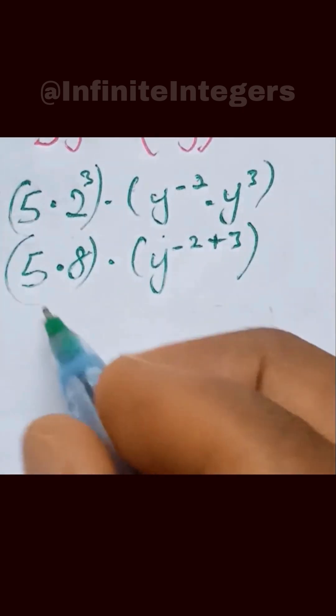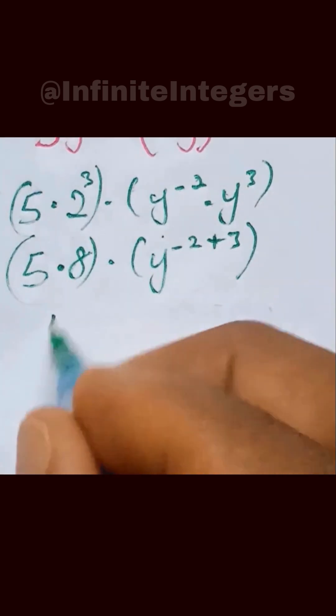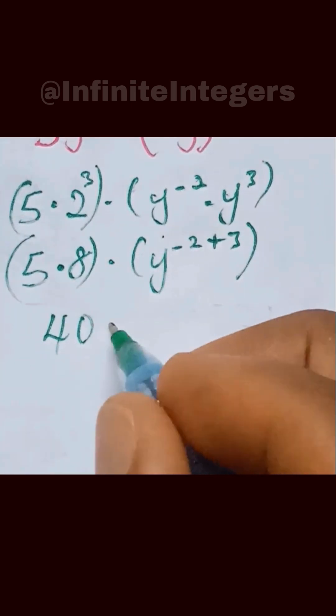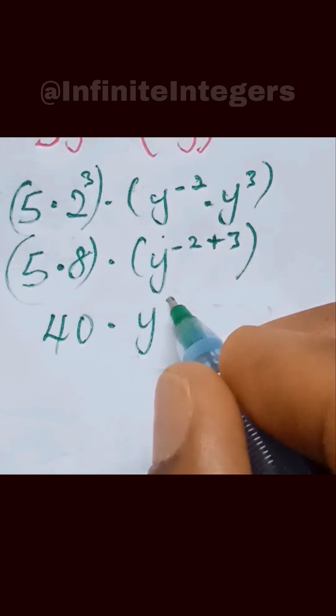Then, 5 multiplied by 8 gives us 40, multiplied by y raised to the power 3 minus 2.